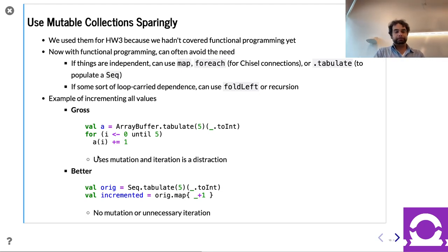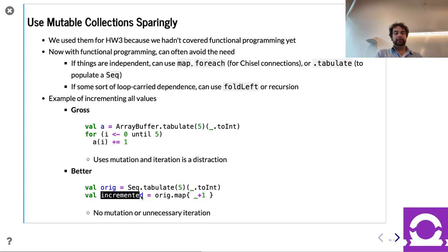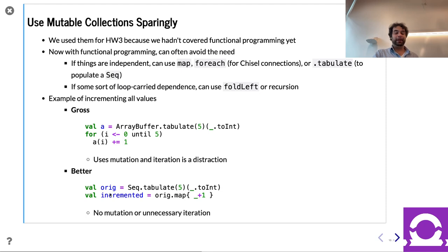Mutable collections like ArrayBuffer can be dangerous for the same reasons `var` can be — you might accidentally overwrite things. A question came up: does a Seq create twice as much memory? Yes, it does use more memory. However, in Chisel we usually don't run out of memory. It's also garbage collected. I would prioritize readability and correctness over runtime memory usage of the Chisel elaboration.